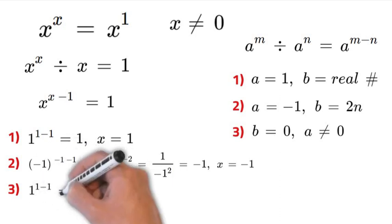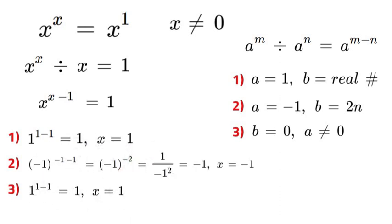Lastly we have 1 to the power of 1 minus 1, which is equal to 1, and x is equal to 1. So therefore out of these three instances, x can either equal 1, negative 1, or 1 again.